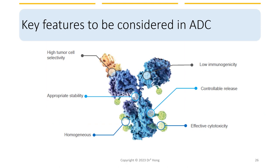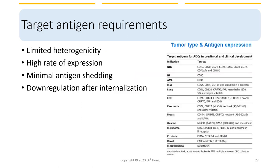In summary, the key features to be considered in ADC include high tumor cell selectivity. The antibody itself needs low immunogenicity and high stability in circulation. The payload drugs are linked uniformly and released in a controlled fashion. The drug needs to be toxic enough to effectively kill the tumor cell. For the target tumor antigens specifically, they need limited heterogeneity, high expression, and low shedding. The antigen also needs to down-regulate after ADC internalization to minimize excess drug intake — in other words, enough drug is enough.